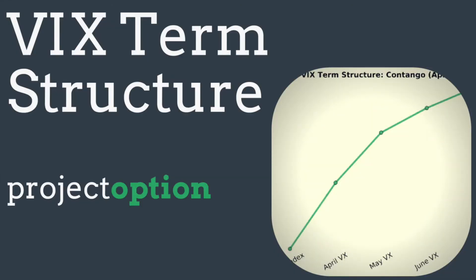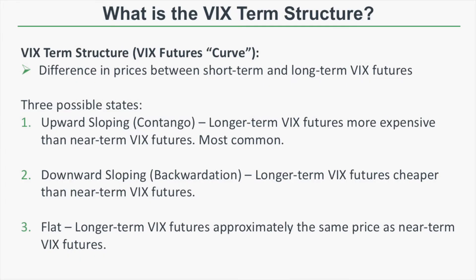Hey everyone, Chris here for Project Option. In this video we're going to talk about the VIX term structure. Some other phrases synonymous with the VIX term structure are the term structure of volatility and the VIX futures curve. If you've heard any of those phrases before, you're going to learn what they mean in this video, and we're also going to talk about why they're important. The VIX term structure is the difference in prices between short-term and long-term VIX futures, or it's the difference in implied volatilities of near-term and longer-term expiration cycles.